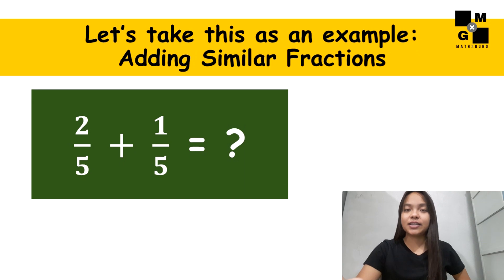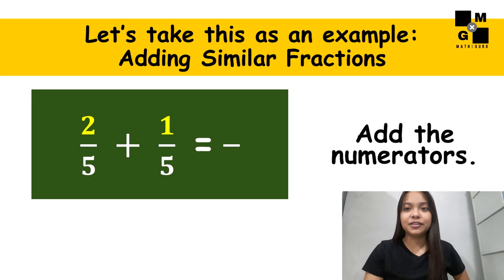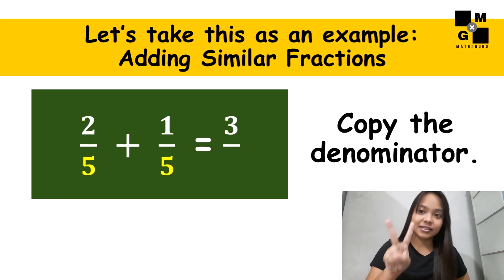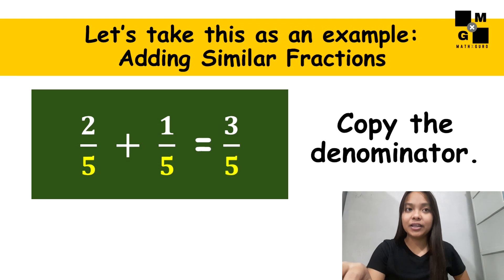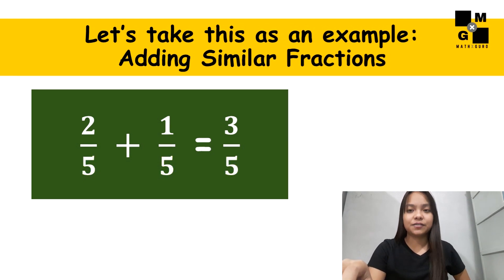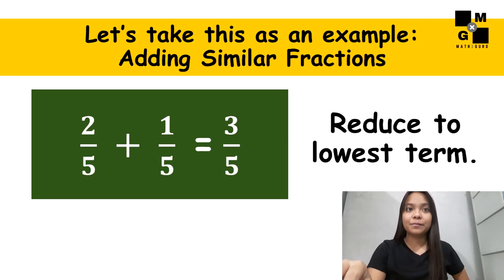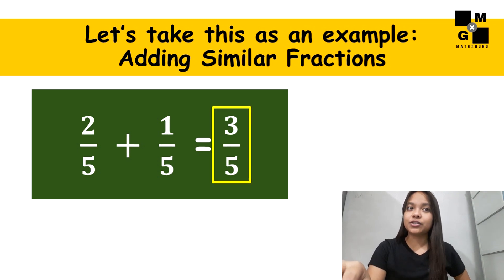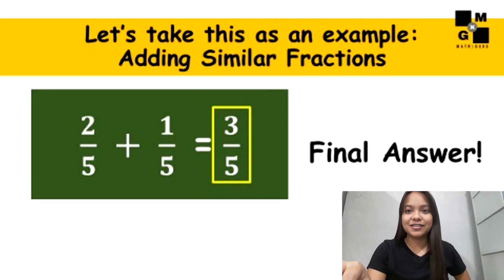Let us have this as an example. What is the sum of two-fifths and one-fifths? First step, add the numerators. Two plus one, and that is three. Second step, copy the denominator. Our denominator here is five. We will end the second step if our answer is already in lowest term. Since three over five is already in lowest term, that will be our final answer.